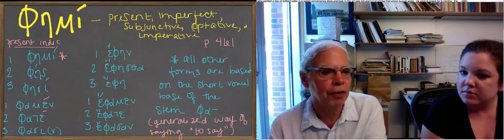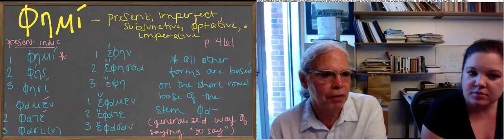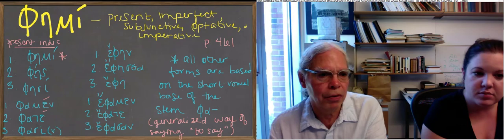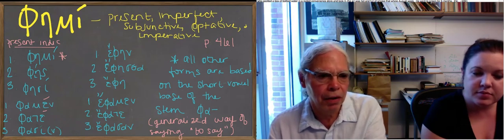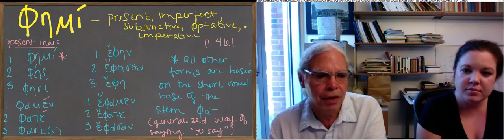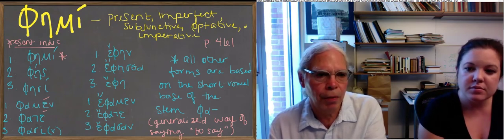But it has the endings of an athematic verb, so if we look at femi, fesi, those are like didomi, didosi, didomen, didote, didoasi. The third person plural ending in asi.